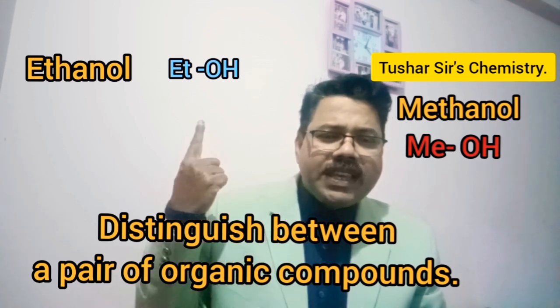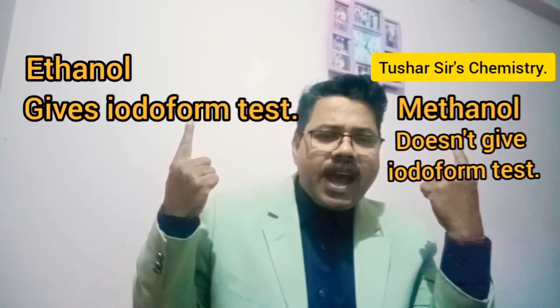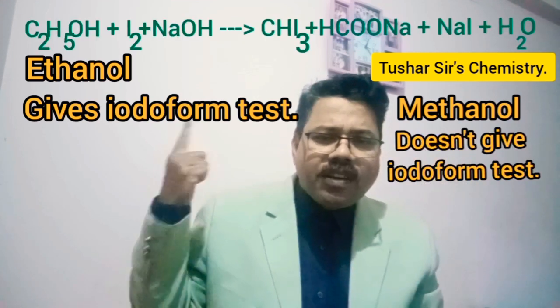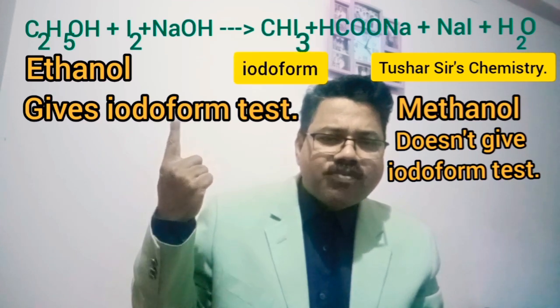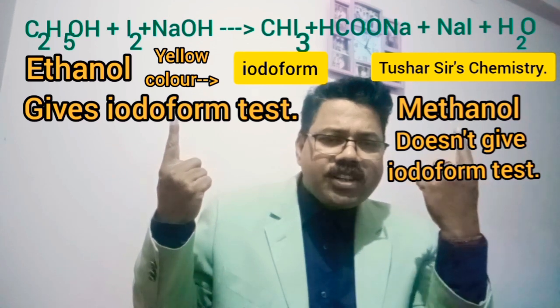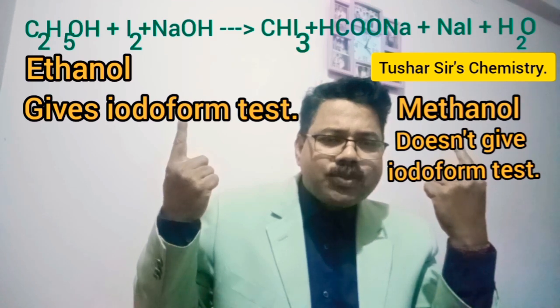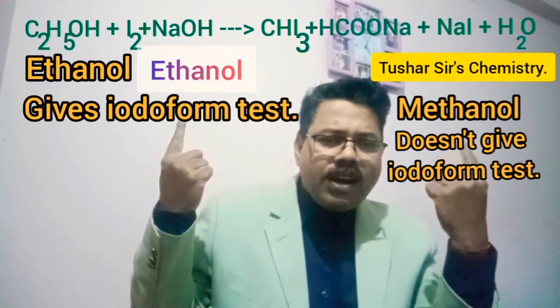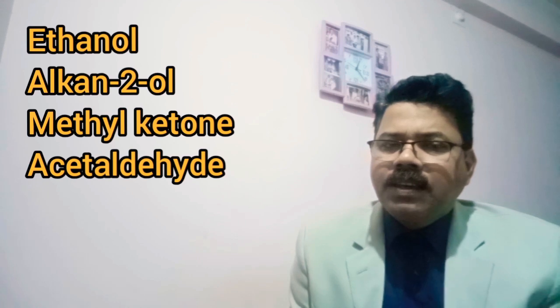Ethanol gives the iodoform test; methanol does not give the iodoform test. Ethanol on treatment with I₂ and NaOH gives iodoform, CHI₃ — a yellow colored solid — whereas methanol does not respond to the iodoform test. So the iodoform test can be used to distinguish between ethanol and methanol.